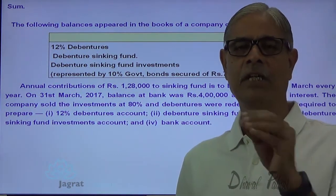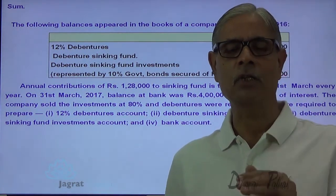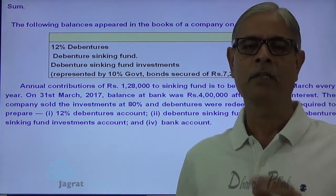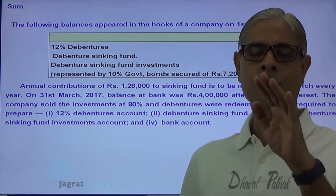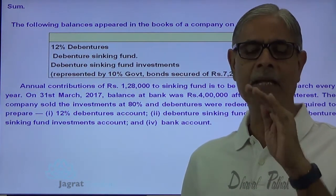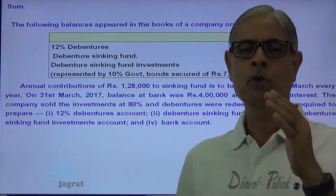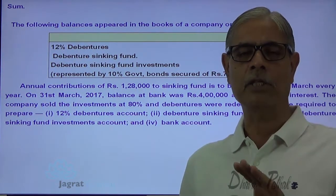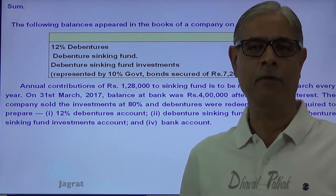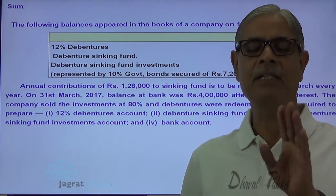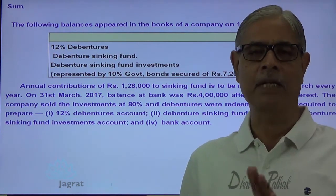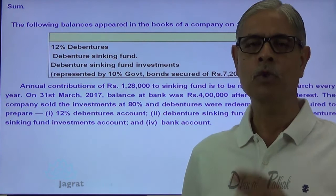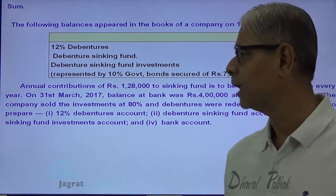Third transaction: investments are sold. Profit or loss on sale of investment is transferred to sinking fund. Then debentures are paid — debentures are redeemed. Debenture balance is transferred to debenture holders account and debenture holders will be paid. Balance of sinking fund will be transferred to general reserve after redemption of debentures. This is how this sum is going to be solved.